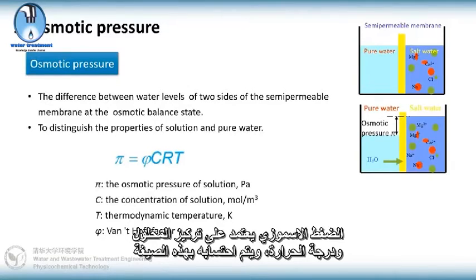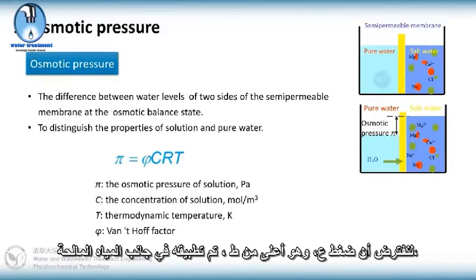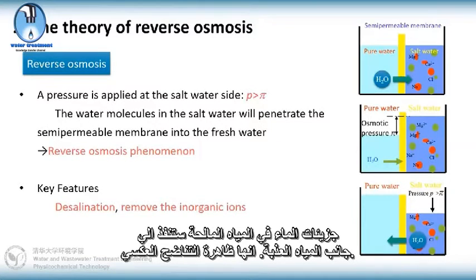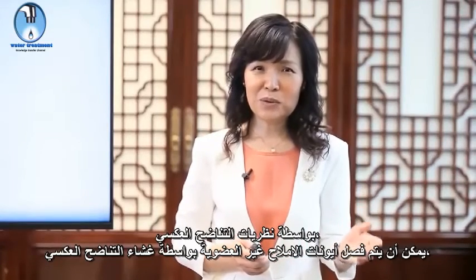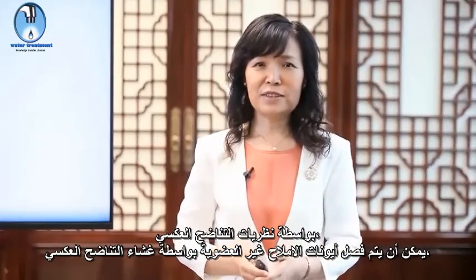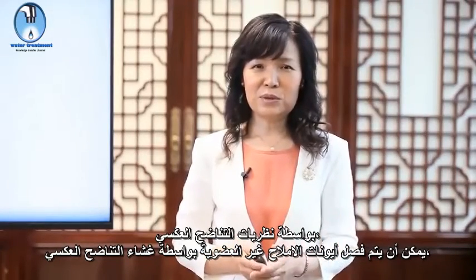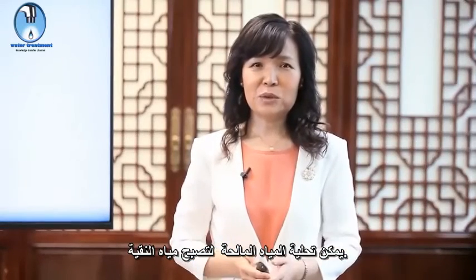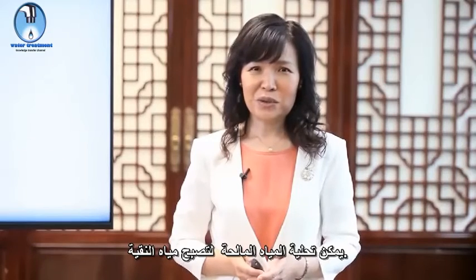Suppose a pressure P, which is higher than π, is applied at the salt water side. The water molecules in the salt water will penetrate into the fresh water. This is the phenomenon of reverse osmosis. By the principles of reverse osmosis, inorganic salt ions can be rejected by the reverse osmosis membrane, and the salt water can be desalinated to become pure water.